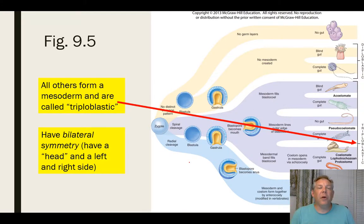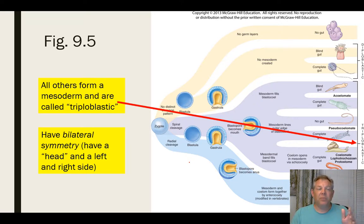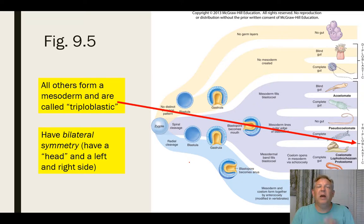All the other animal groups we'll talk about do form the mesoderm — so they form ectoderm, endoderm, and mesoderm. They're called triploblasts, or triploblastic, because they form three germ layers. Whereas the diploblasts tend to show radial symmetry, the triploblasts tend to show bilateral symmetry — they usually have cephalization, and they have a top and a bottom and a left and a right. So we group those differently.